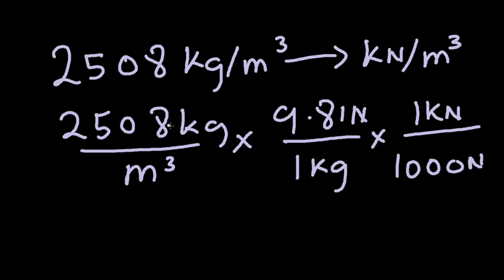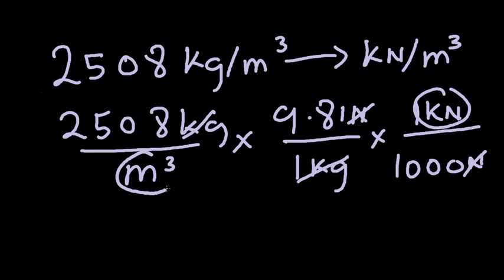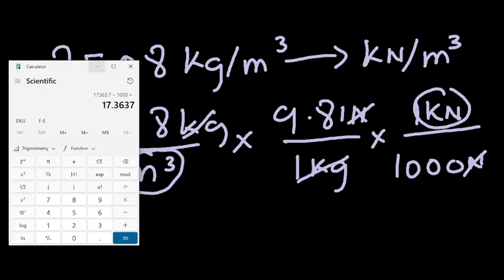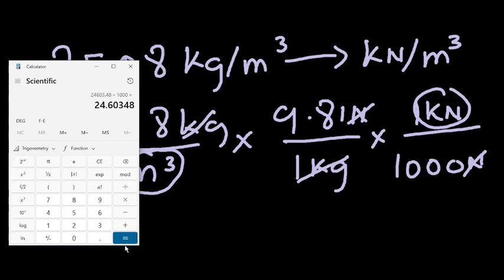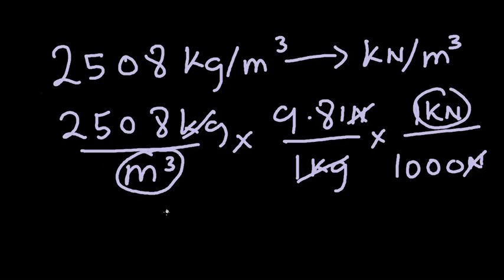This unit cancels this unit, and this unit cancels this unit, so we are left with kilonewtons per cubic meters. Now we can use our calculator to get a final answer. We have 2508 times 9.81, divided by a thousand. The answer is approximately 24.60 kilonewtons per cubic meters.